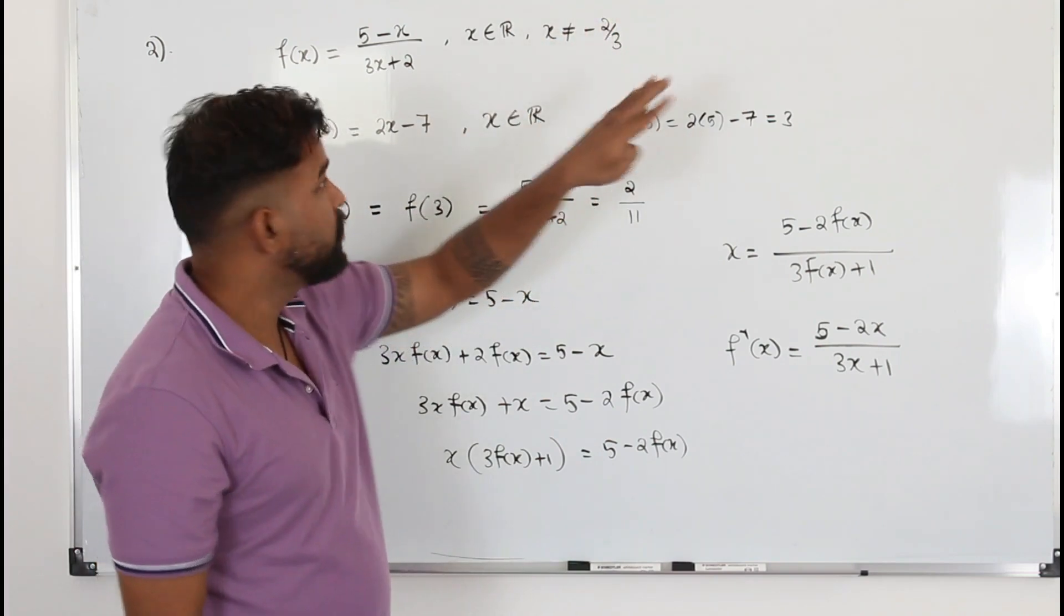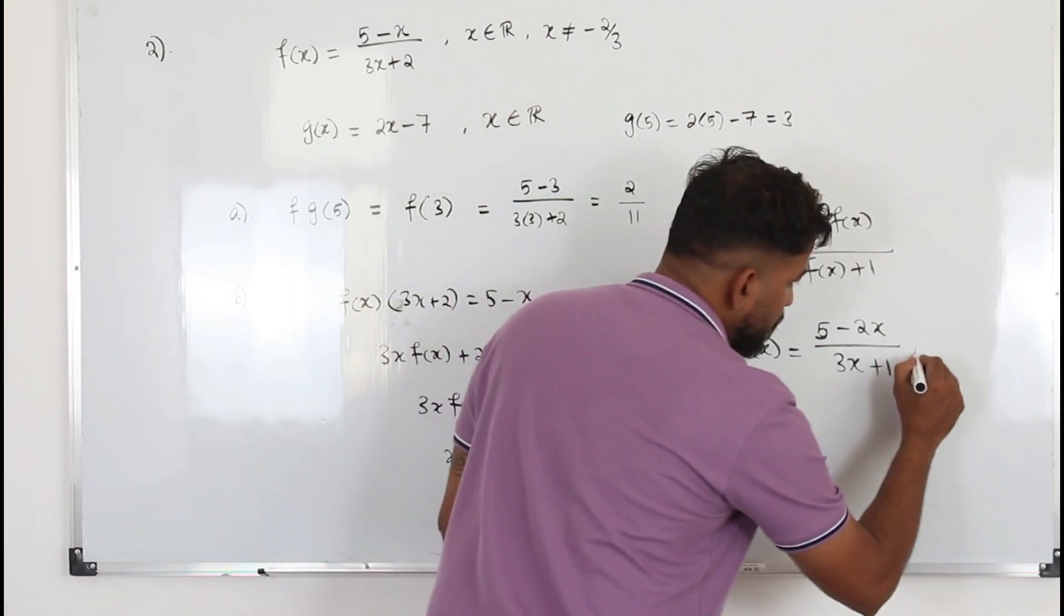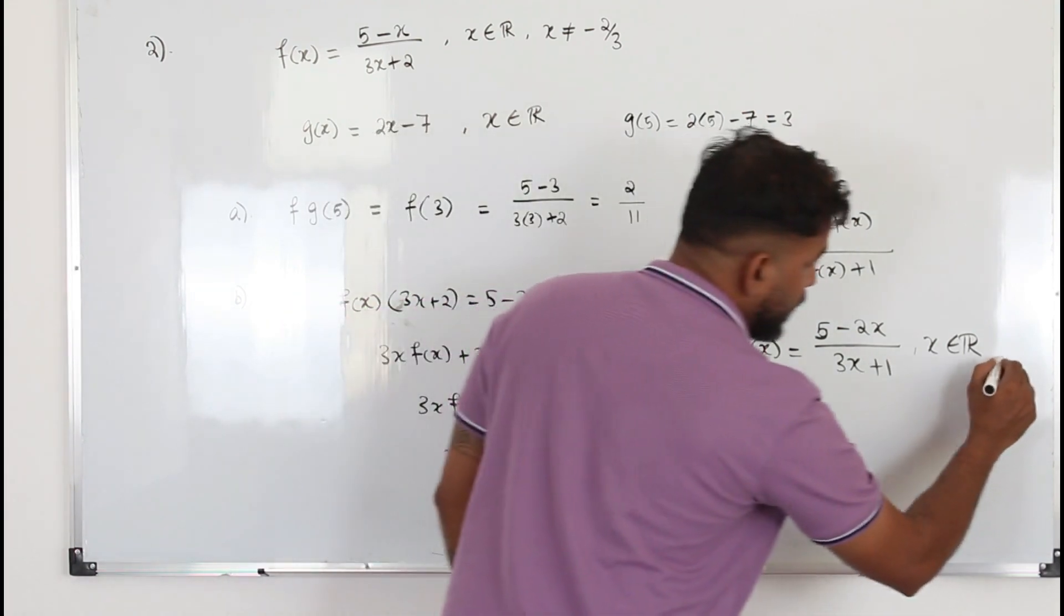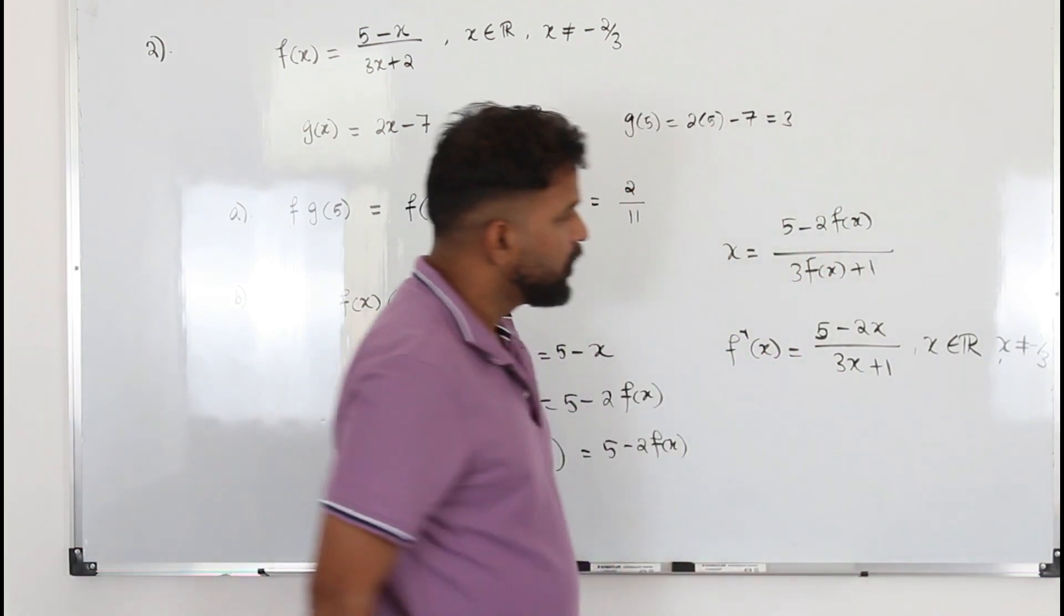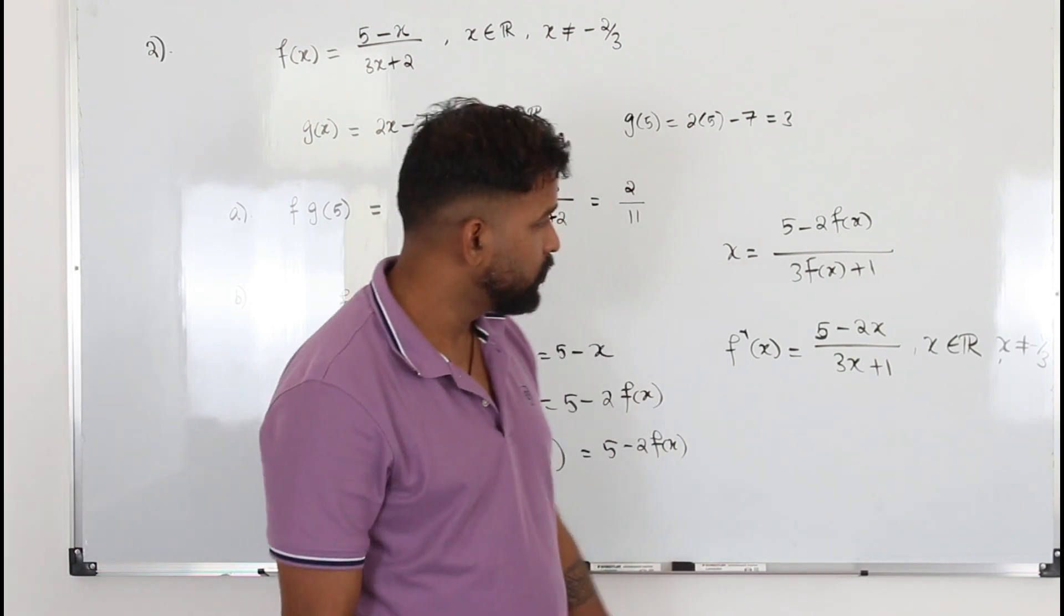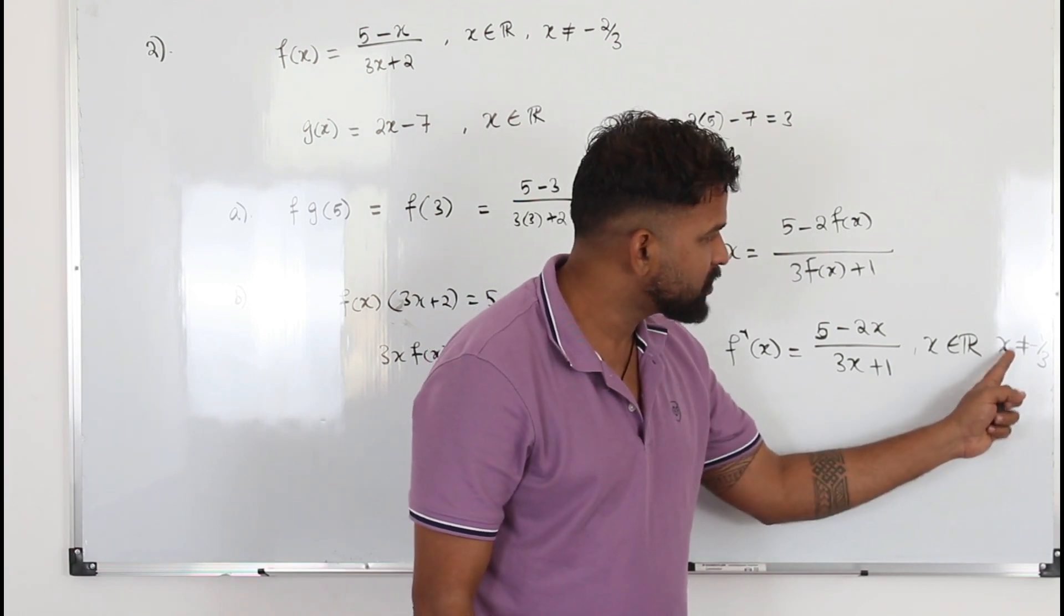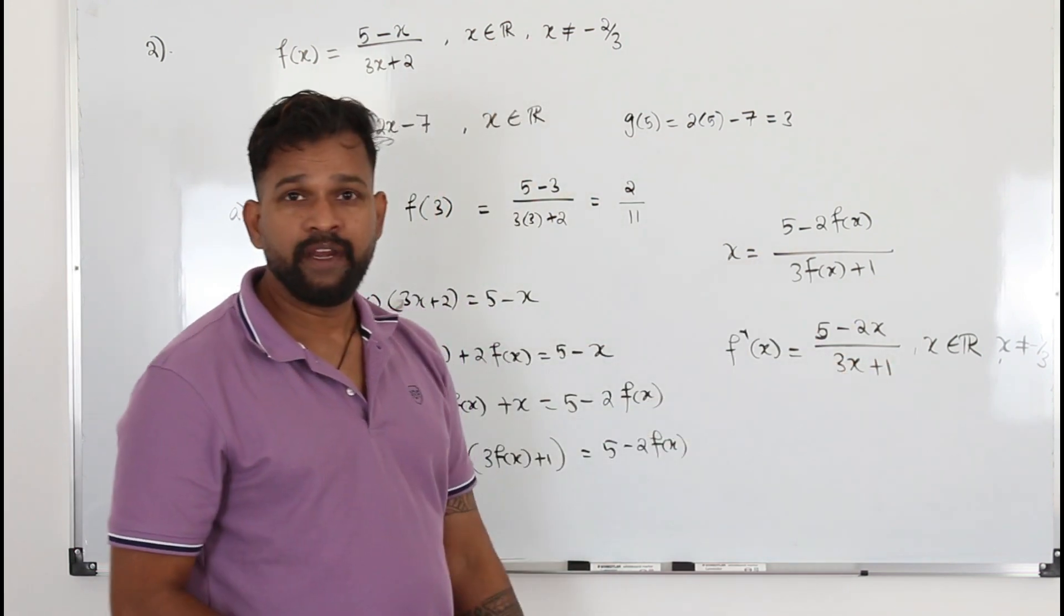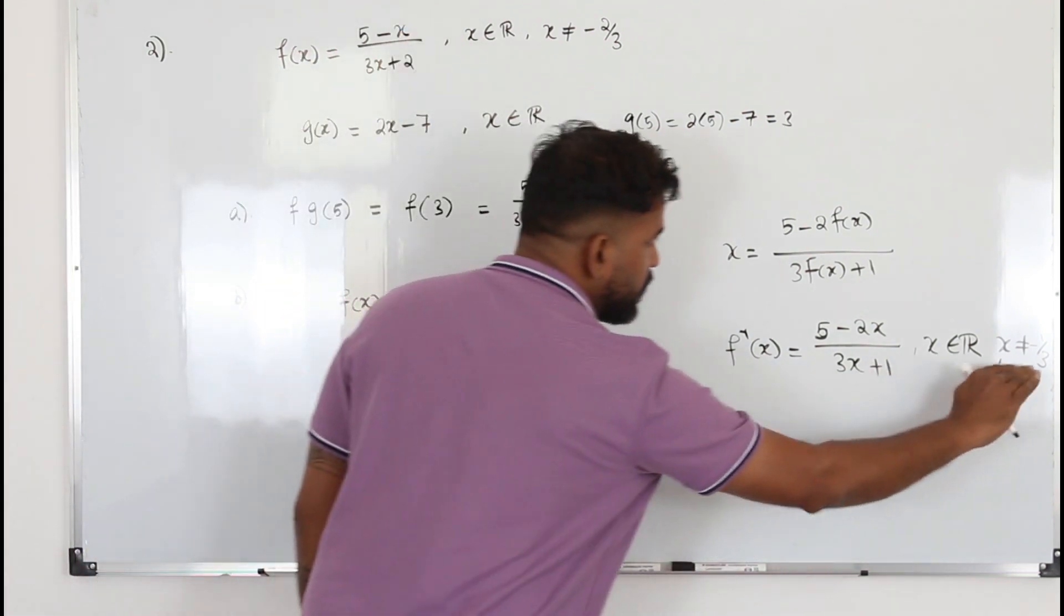So x takes all the real numbers. If x takes all the real numbers, it's very easy to find the domain. Just put x takes all the real numbers here also. But x cannot be -1/3. Because if x is -1/3, it becomes zero. Division, the denominator cannot be zero. So how do you find this number? Take 3x + 1 equals zero. So x is -1/3. So write as x not equal. So if x takes all the real numbers, it's very easy to find domain of f inverse. You don't need to worry about finding the range of f(x). From here straight away, you write the domain.